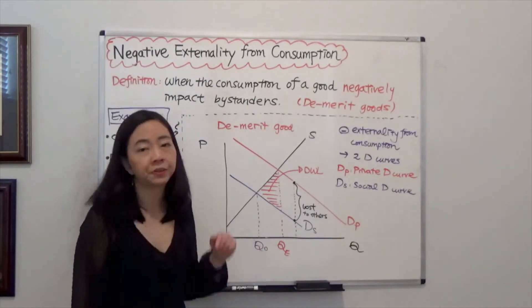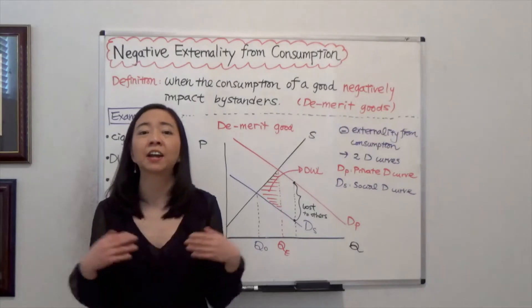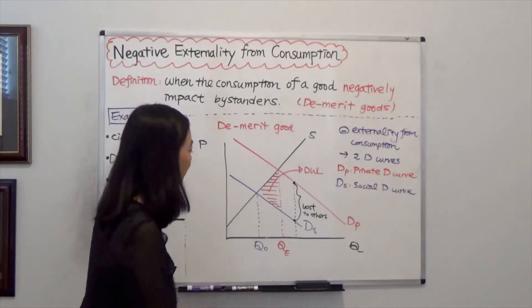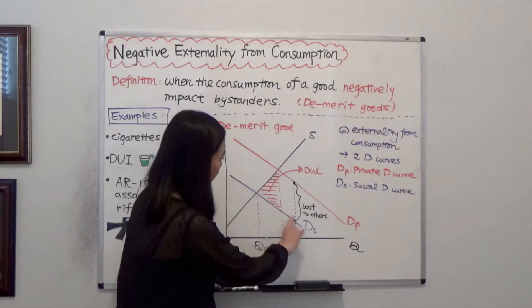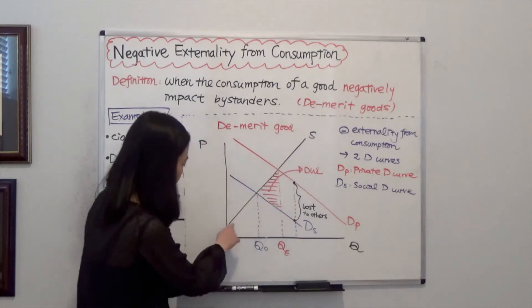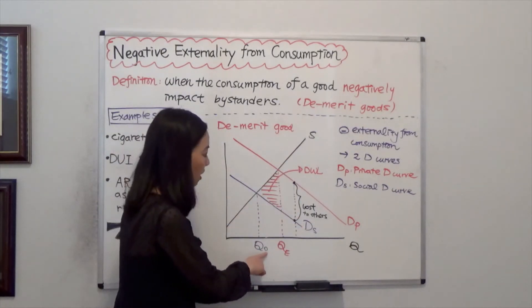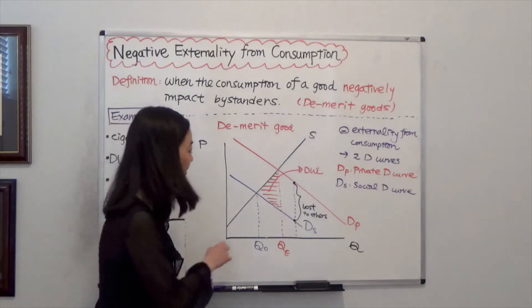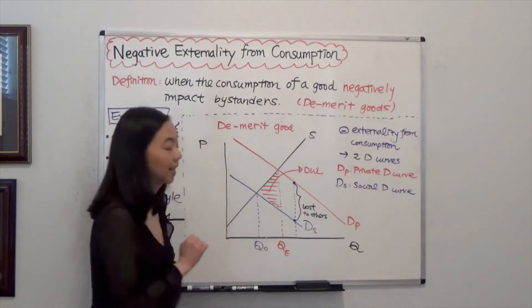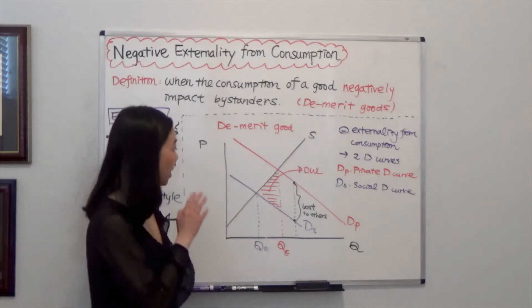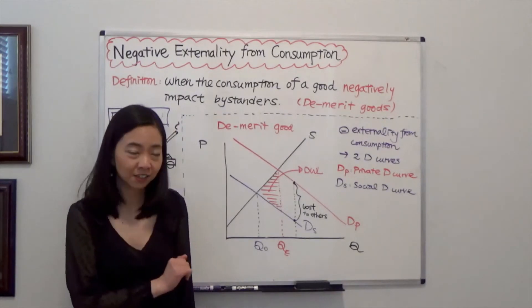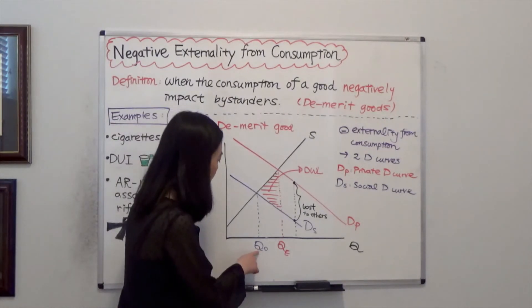But when you are thinking about what is best for the entire society, you should look at the social demand curve. The intersection of the social demand curve and supply curve gives you QO. O stands for optimal. That is the best for society. Therefore, when you are trying to find how much deadweight loss is, you should look at QO.